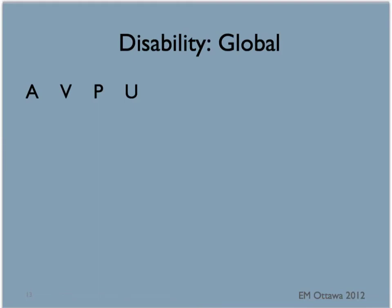There are two global scores. The first one is the AVPU scale. This scale measures the best response of the patient — whether they are awake spontaneously (A), whether they only respond to voice (V), to pain (P), or unresponsive (U).